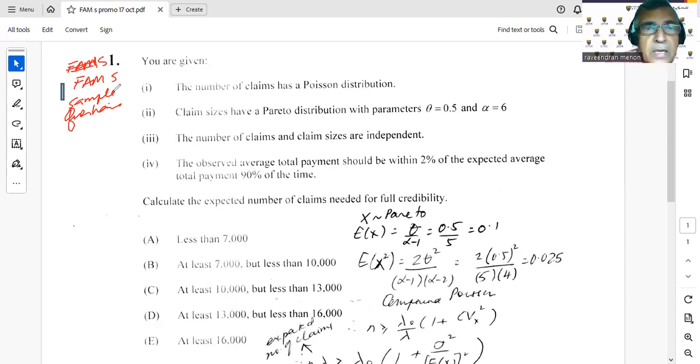Let's look at question number one. You're given the number of claims has a Poisson distribution. Claim sizes have a Pareto with parameters theta = 0.5 and alpha = 6.